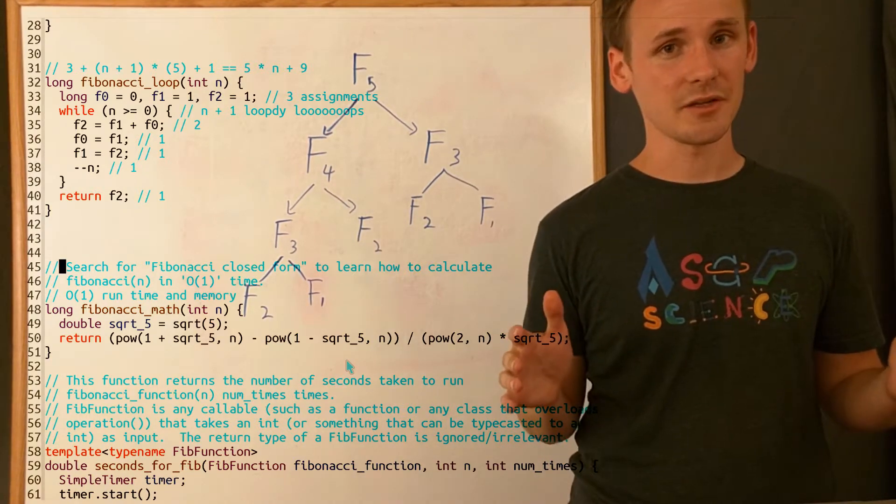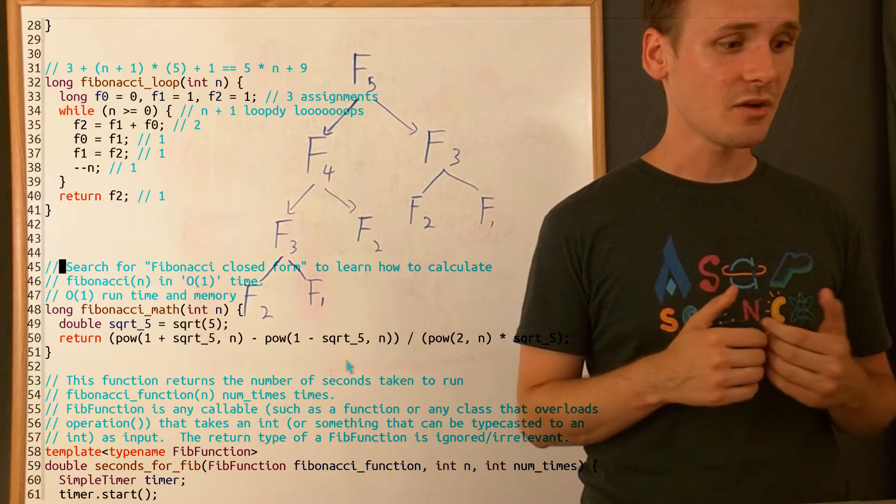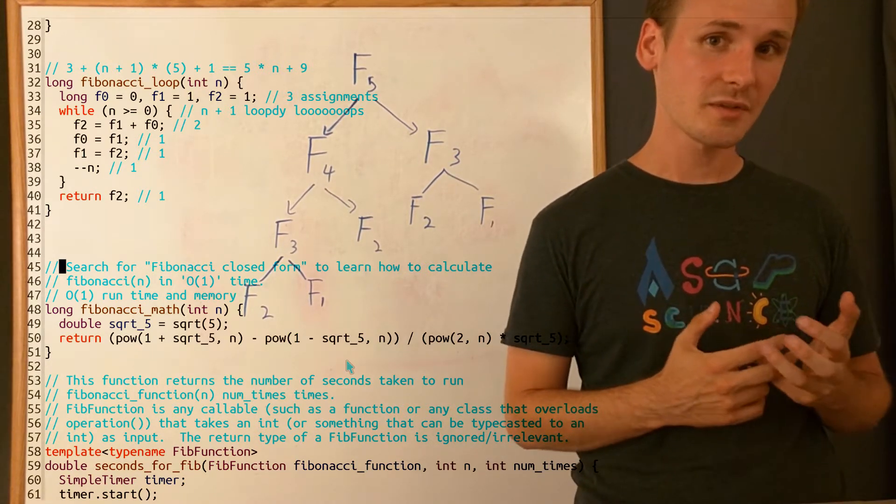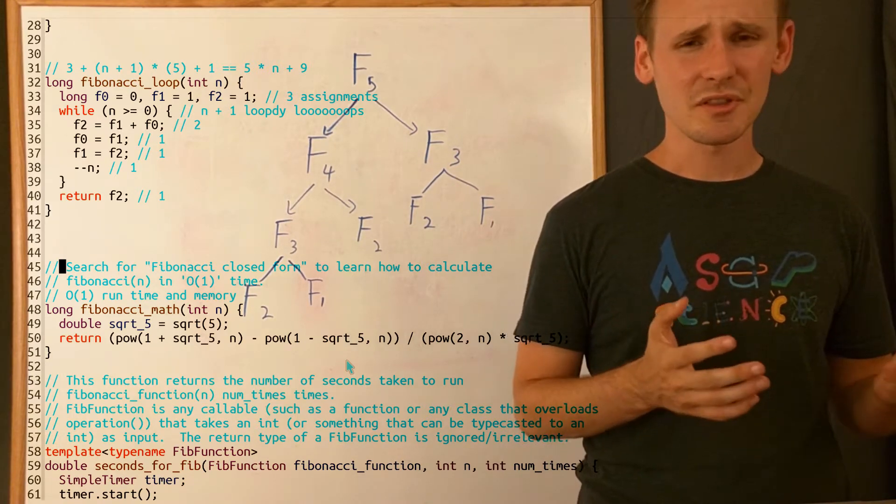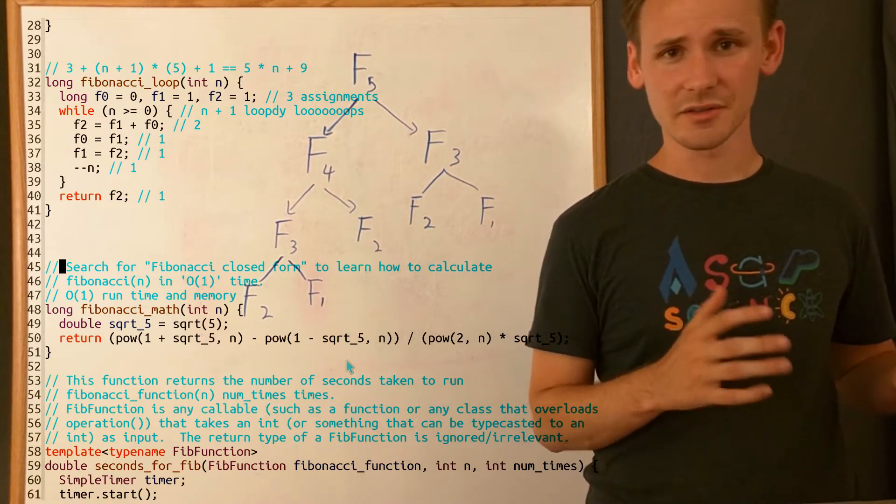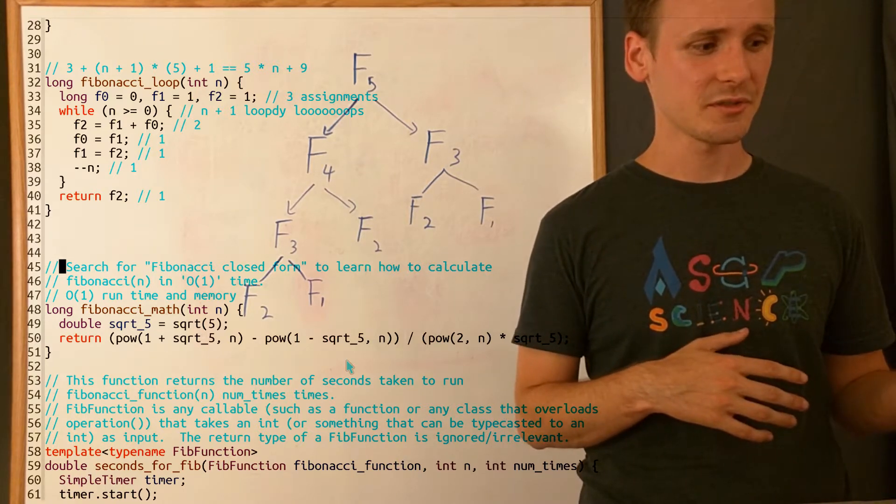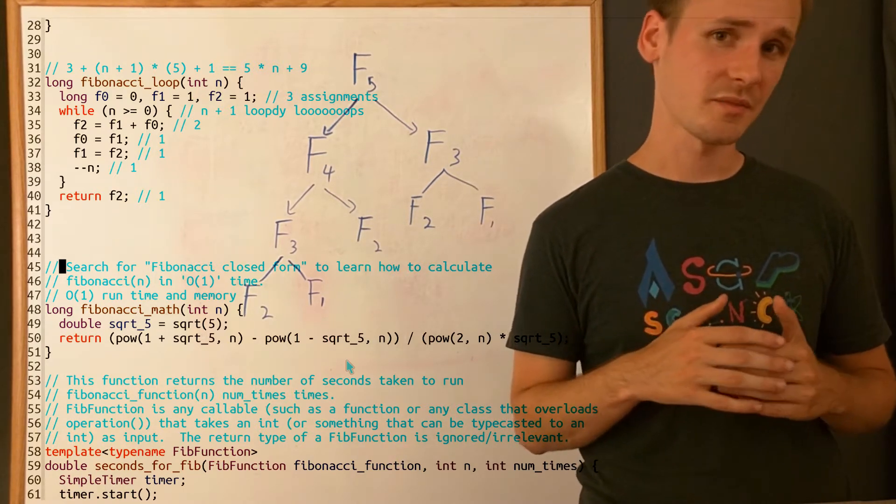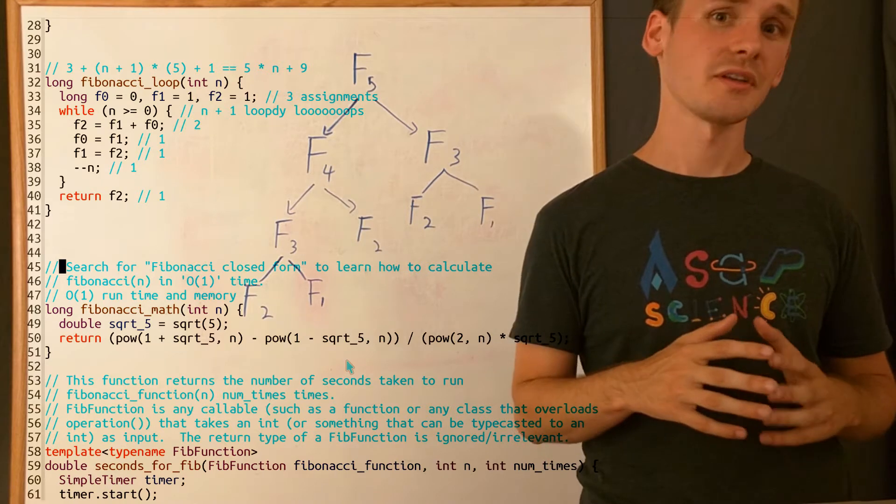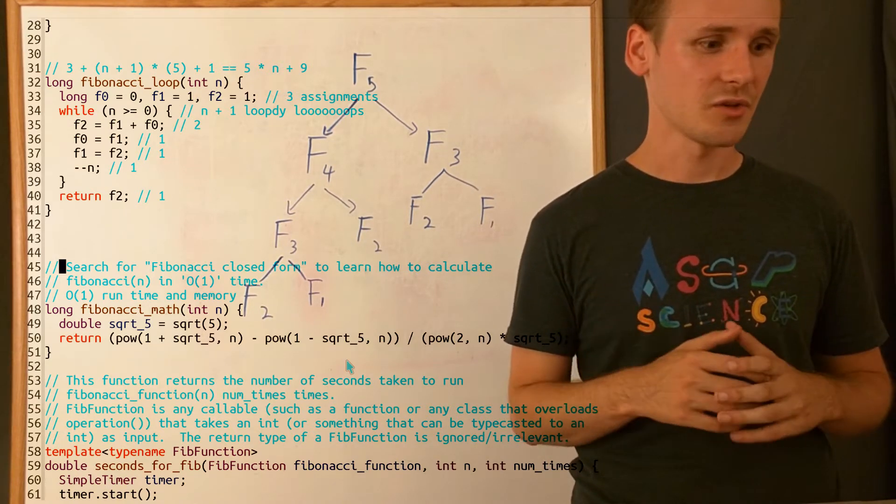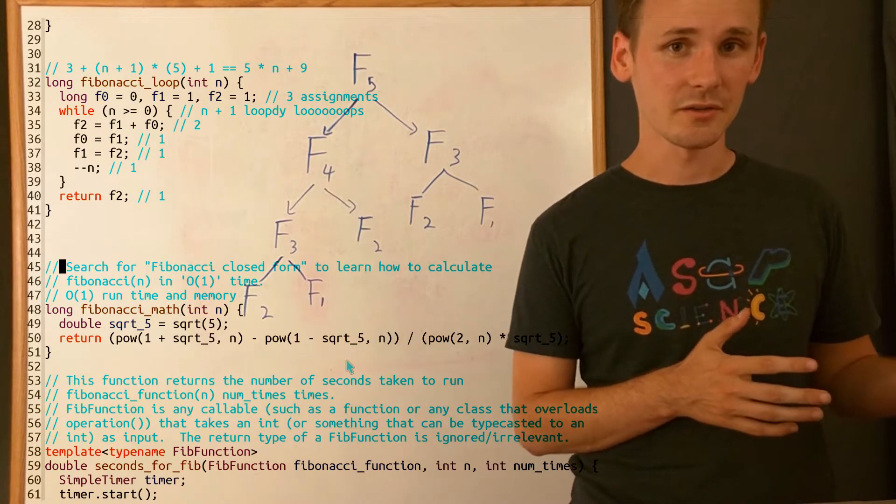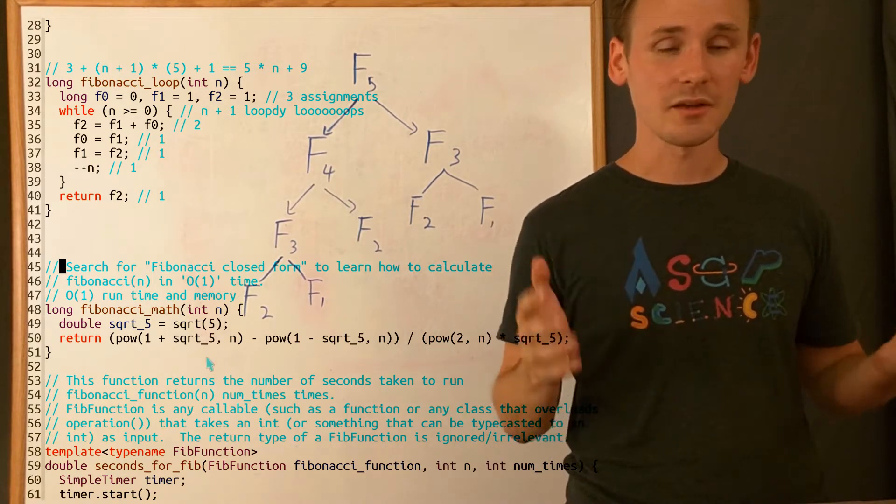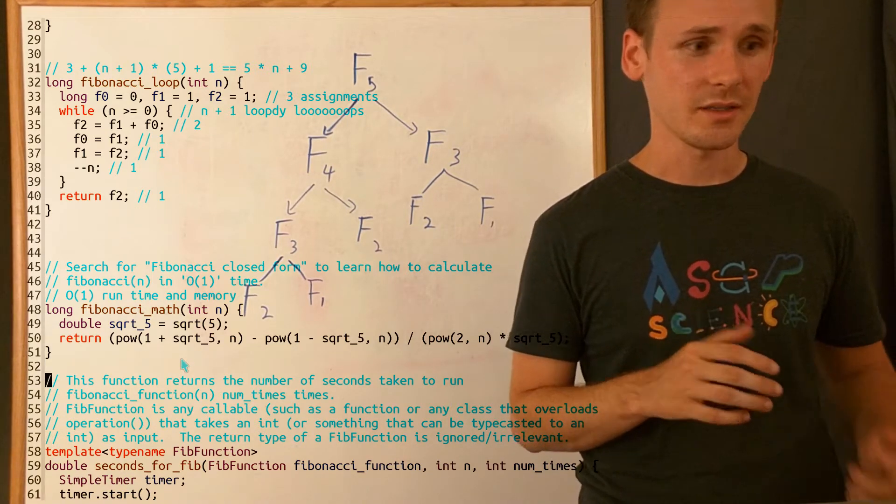The last version of the Fibonacci function that we have here is always going to take a constant number of steps, which makes it O(1), but it's also one of the most complicated and hard to understand ones. This also just goes to show that oftentimes when you make something much faster, the code also gets more complicated. So there's actually a trade-off there between code that is easy to read and understand, and speed. That's not always the case, but it happens quite a lot.